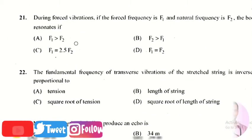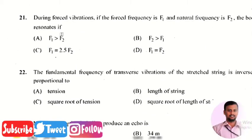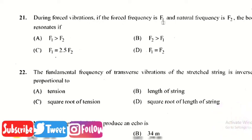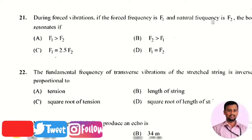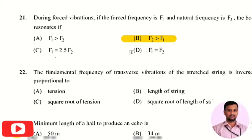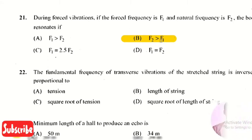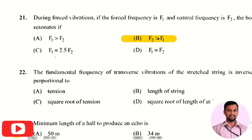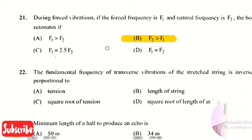The next question in the applied science section is: during forced vibration, if the forced frequency is F1 and natural frequency is F2, the body resonates if F2 is greater than F1. That is, the natural frequency should have a higher value than the forced frequency, so then the body will resonate in forced vibration.